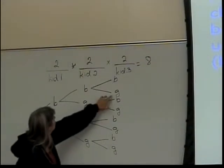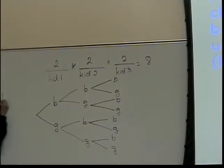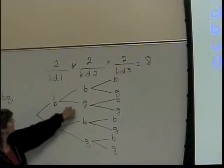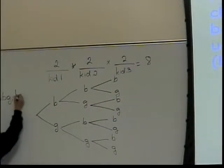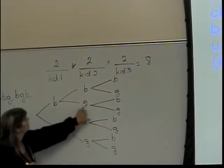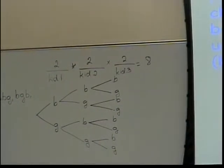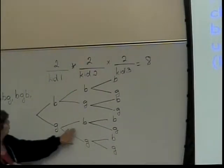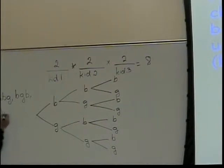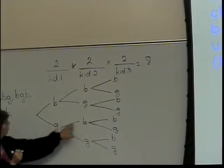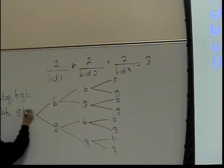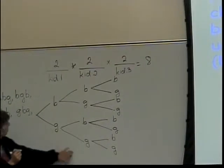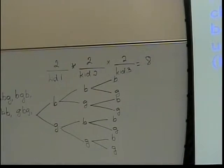Then I have boy, boy, girl. Here I have boy, girl, boy. Here I have boy, girl, girl. Here I have girl, boy, boy. And girl, boy, girl. And girl, girl, boy. And I think I'm now going to do girl, girl, girl. And there's my sample space.